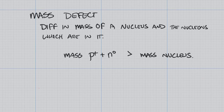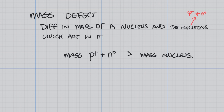That big difference comes when we talk about something called mass defect. Mass defect is the difference in the masses of a nucleus and the nucleons within it — and nucleons are simply protons and neutrons. The mass of a proton and neutron added up individually is actually going to be larger than the mass of the nucleus itself.